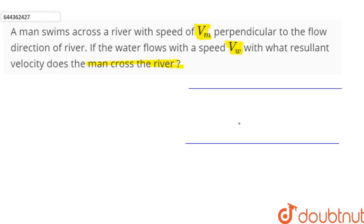So if a man swims across a river, let's denote the vector as AO.